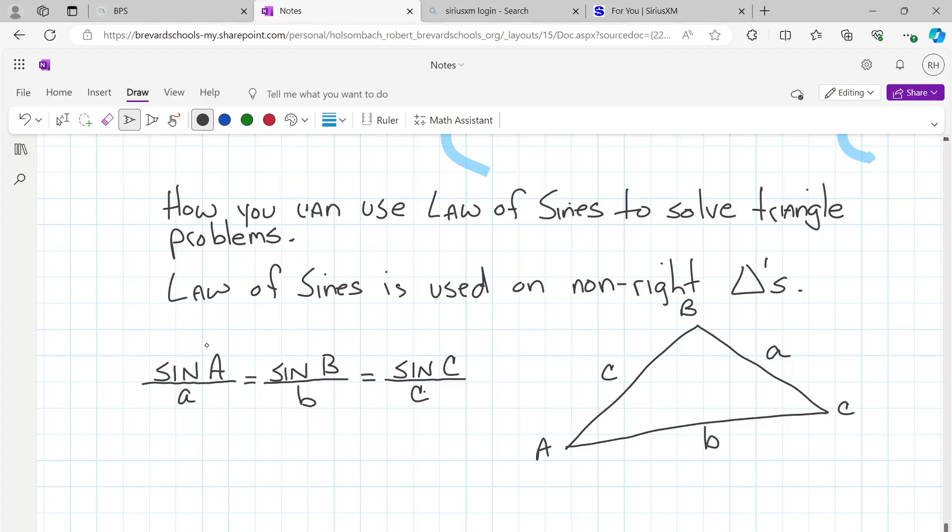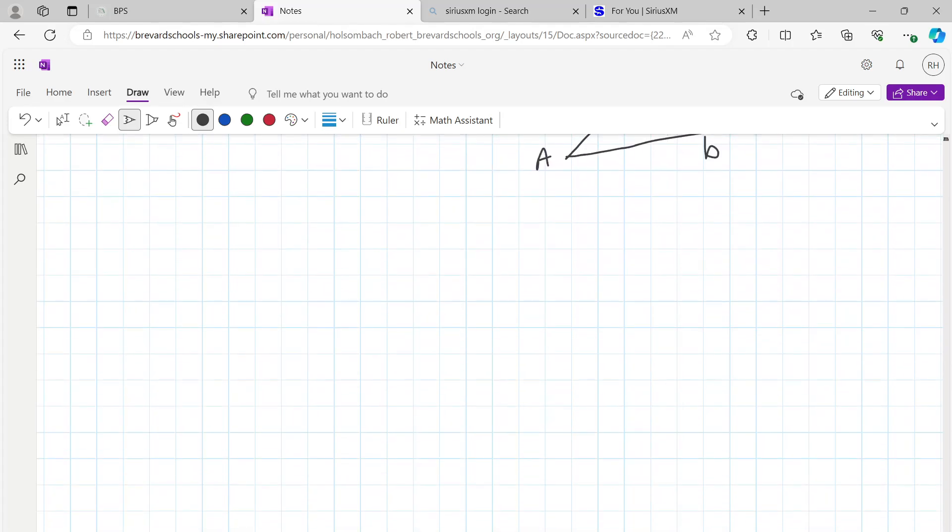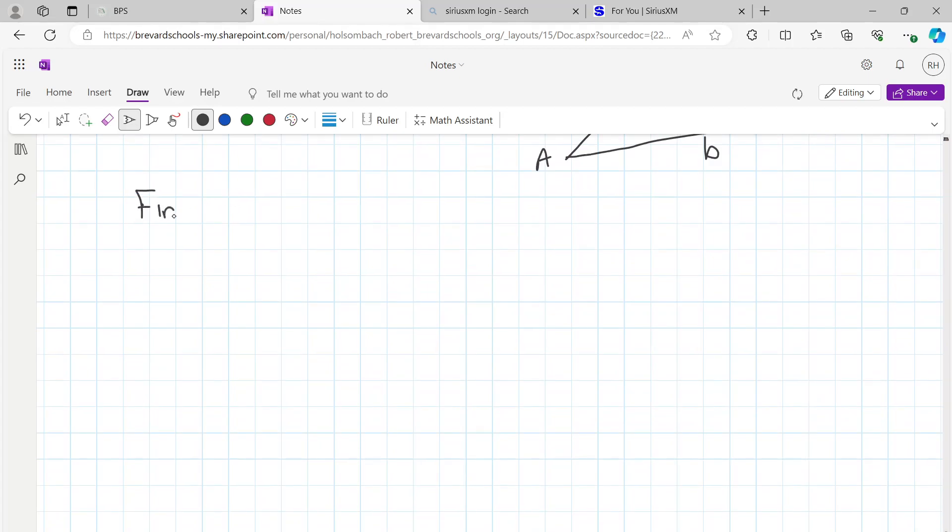So typically what you're going to do is write a proportion to solve for a missing side length in a non-right triangle today. If you look at example one, that's on the bottom of page 588, and they're asking you to find x, working to the nearest tenth.